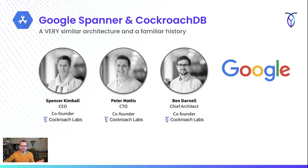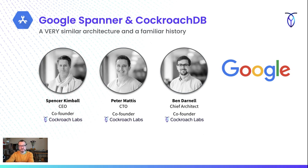I would be remiss without mentioning our three founders — Spencer, Peter, and Ben — all three of them were in the employee 300 range at Google. Peter and Spencer helped build Colossus, which is the back-end file system, and Ben was building Reader. They had a lot of interaction with all the internal tools used to build things, including Spanner. When they left and were starting a company, they were frustrated that they didn't have the exact same tools. So ultimately, the inception of Cockroach really came out of frustration — they started building an open-source version of Google Spanner and named it CockroachDB, after the resilient nature of these databases. Really, this is Google infrastructure for everybody else.